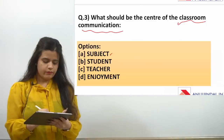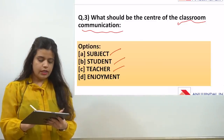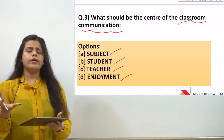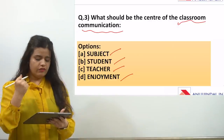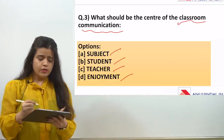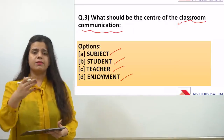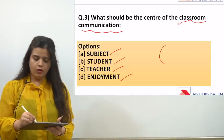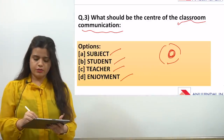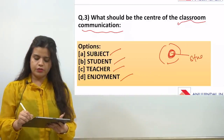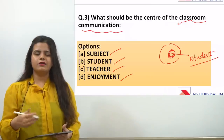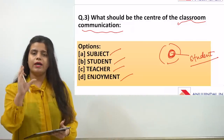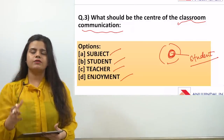The options are: subject, student, teacher, and enjoyment. Subject is somewhat important, but when we consider what subject, teacher, and enjoyment all ultimately serve, they all work for one thing — the student. Without the student's understanding, there is no point in having a subject, books, a teacher, or enjoyment. So the student is the center of classroom communication.